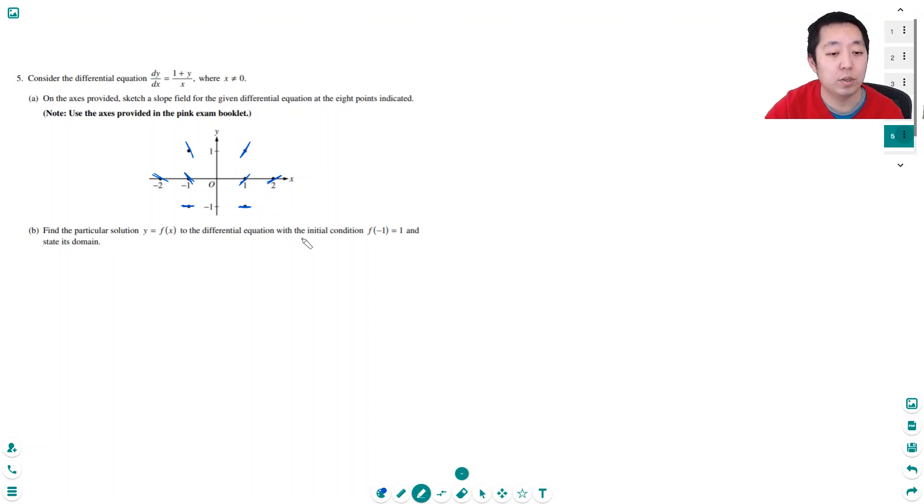Find the particular solution to the differential equation with the initial condition f of negative one equals one. Well, the only differential equation techniques that you guys know in AP calculus AB is separation of variables. So I bring the dx up and I bring the y down to the other side. So I get dy divided by (1+y) is equal to dx over x.